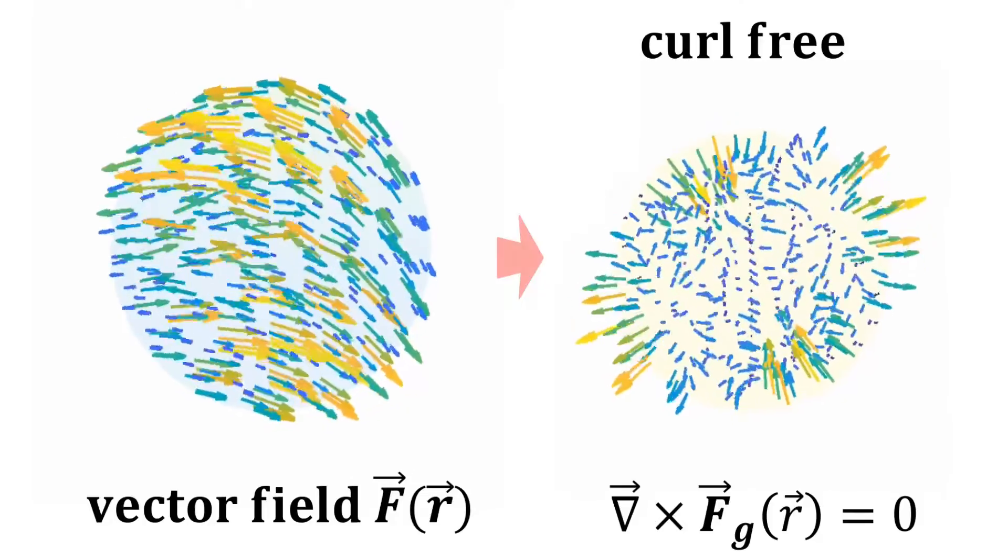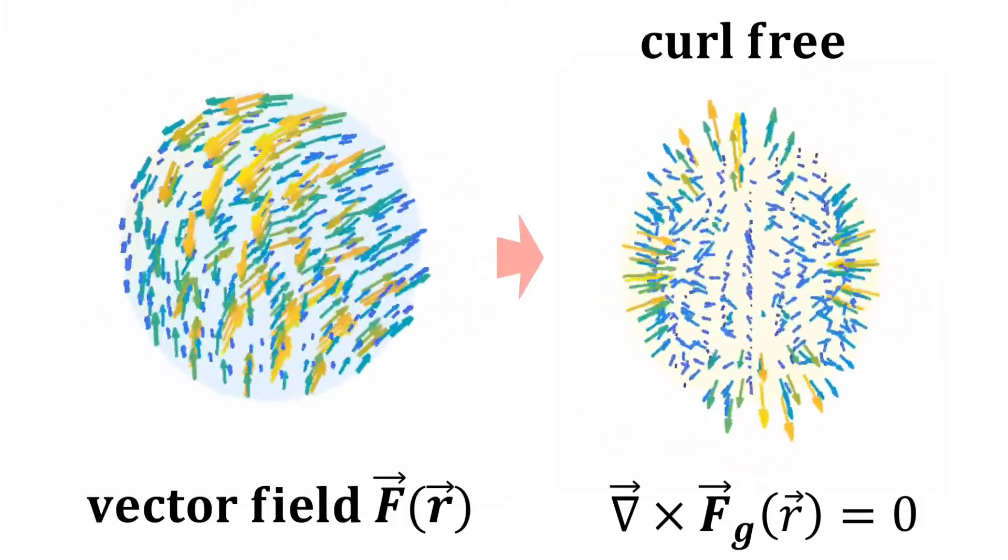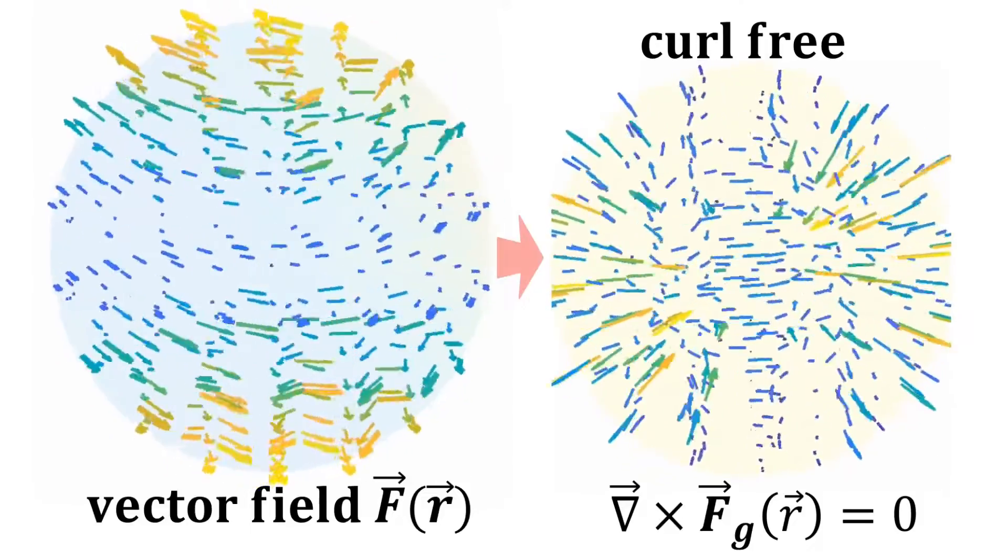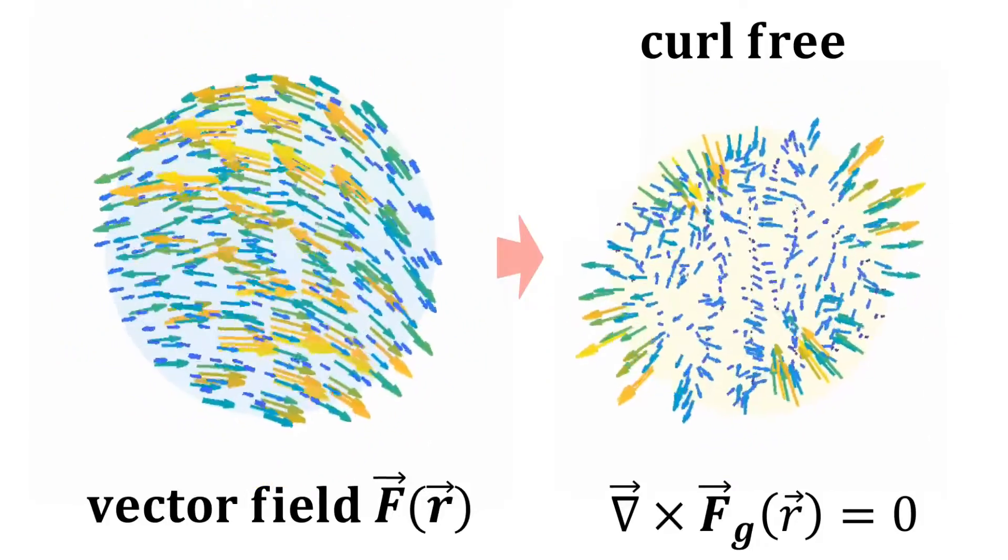First we have the curl-free component, or vector fields that is non-curling or irrotational. Sometimes we also call this the longitudinal component.